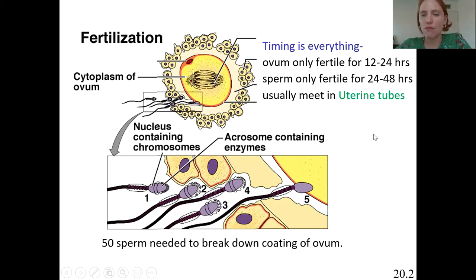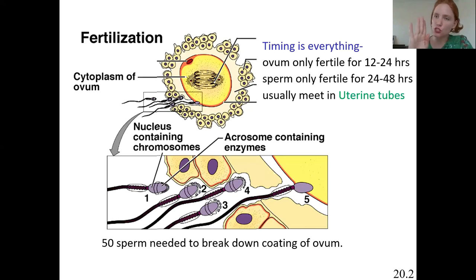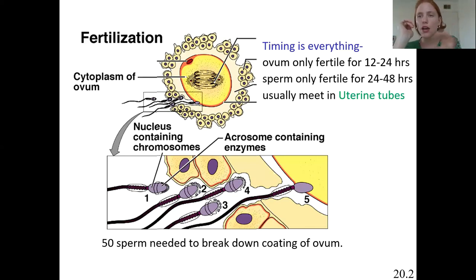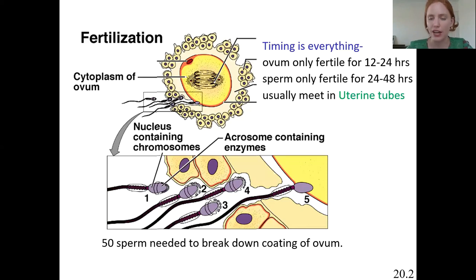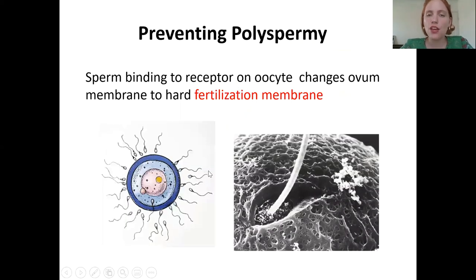Fertilization usually occurs in the uterine tube. The sperm has to travel from the vagina, through the cervix, through the uterus, all the way into the uterine tube — at the same time that the egg is traveling from the ovaries to the uterine tube. They meet kind of in the middle. It really is about chance and getting the timing correct.